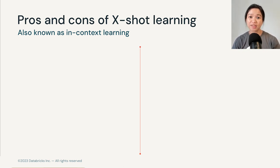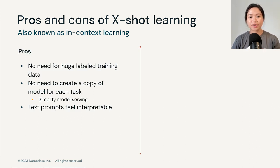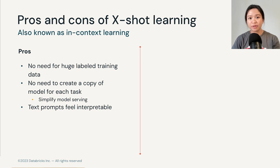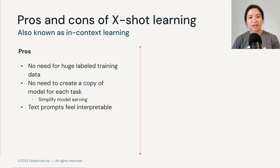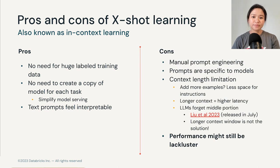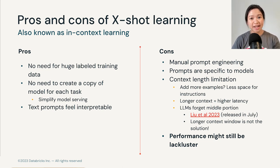Few-shot learning is also commonly known as in-context learning, because we provide the LLM some context to learn from during its output generation process. The advantage is that there's no need for labeled training data and we don't have to create a copy of the model for each new task, which greatly simplifies the deployment process. Probably the nicest advantage is that the text prompts can be very easily understandable, since those are the inputs we humans craft as text to pass to the LLM. But the con is that everything is manual and labor-intensive, and the prompts can be highly specific to models — meaning when you switch to a different model, you may need to develop a new prompt altogether.